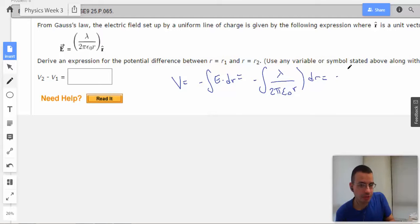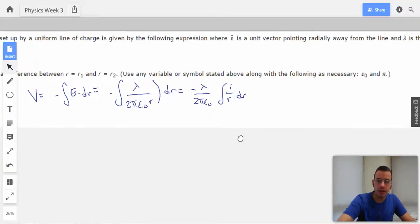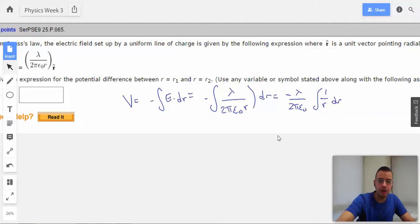We also know that almost everything here is a constant except for the R. And we know that we are going to find a potential difference between R1 and R2.